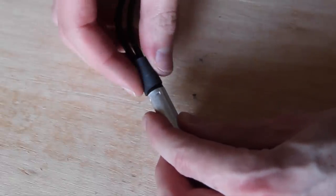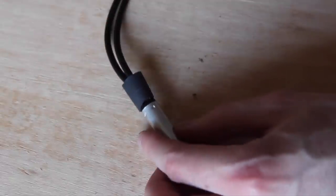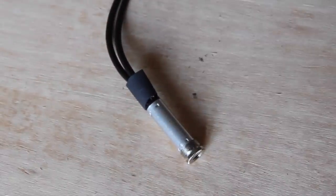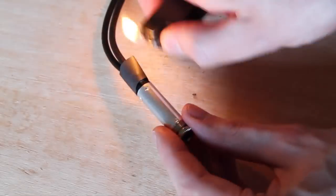Impose the heat shrink tube and use a lighter or better a hot air gun to shrink it. Additionally wrap some electrical tape around it.